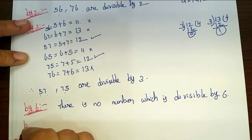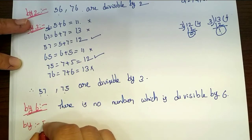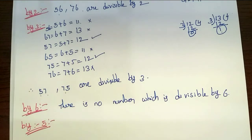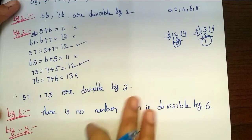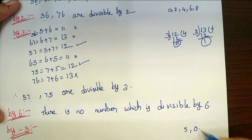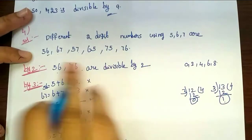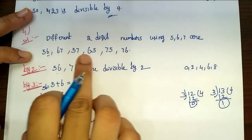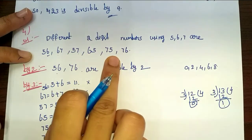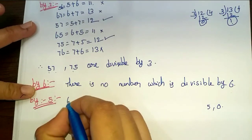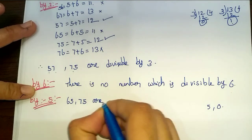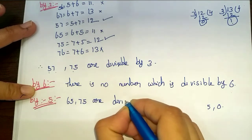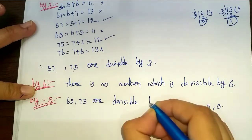Divisibility rule by 5: last digit must be 5 or 0. So 65 and 75 — their last digit is 5. So 65 and 75 are divisible by 5.